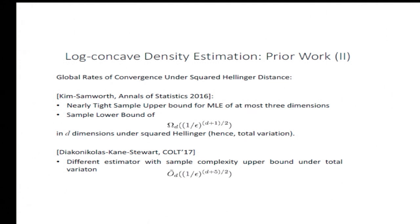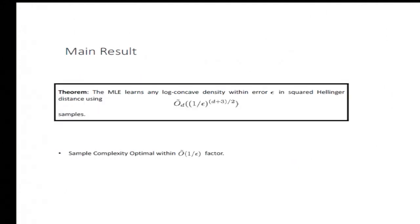The main result of this paper is an analysis of the MLE. We show that the MLE has this sample complexity in every dimension, in particular dimensions four and above. Because of the lower bound by Kim and Samworth, this sample upper bound is actually optimal up to a 1-over-epsilon factor. Ideally we would like to remove that factor, but at least now we know something for any fixed dimension.